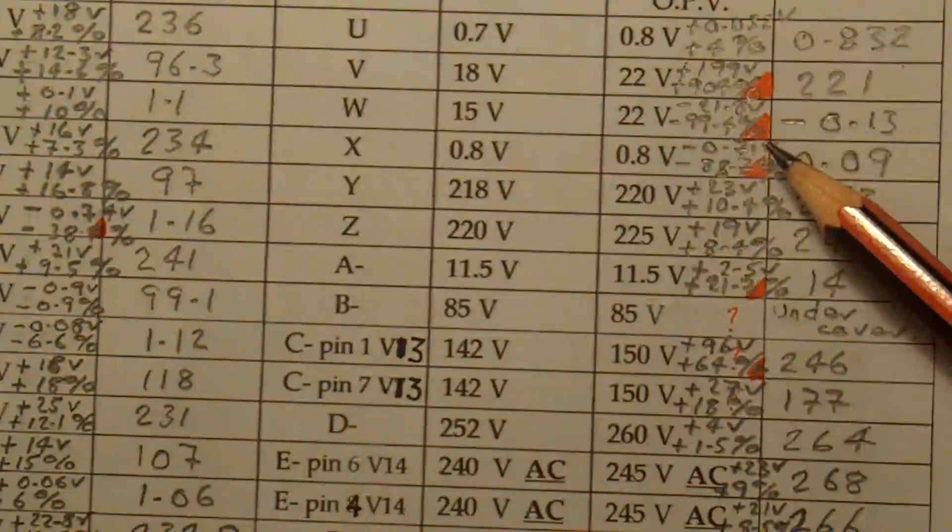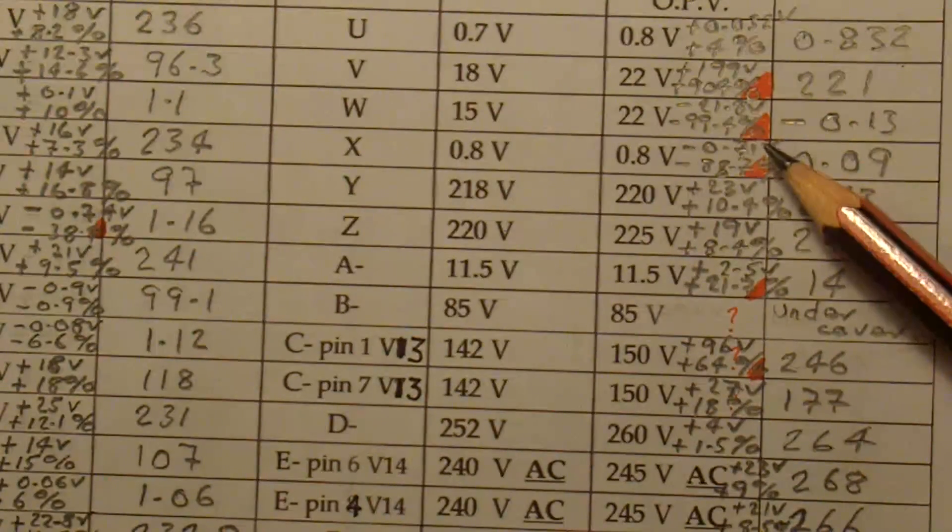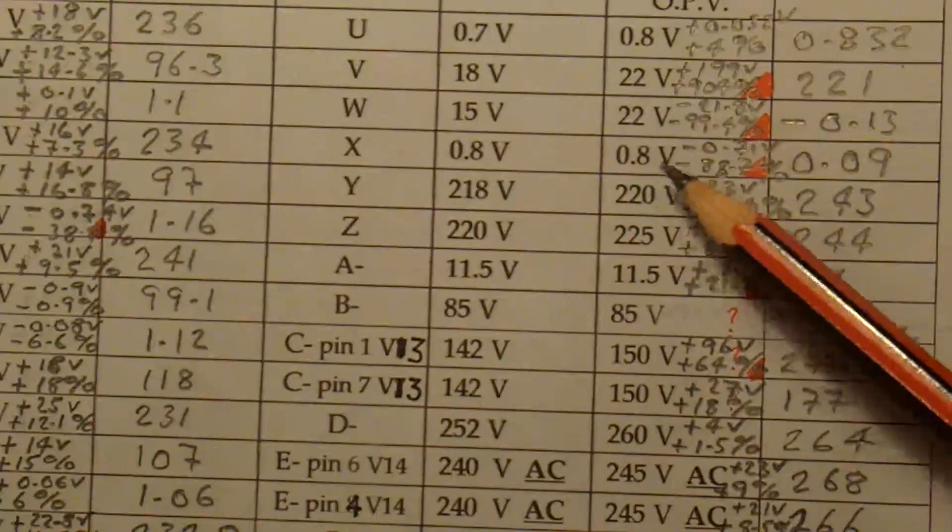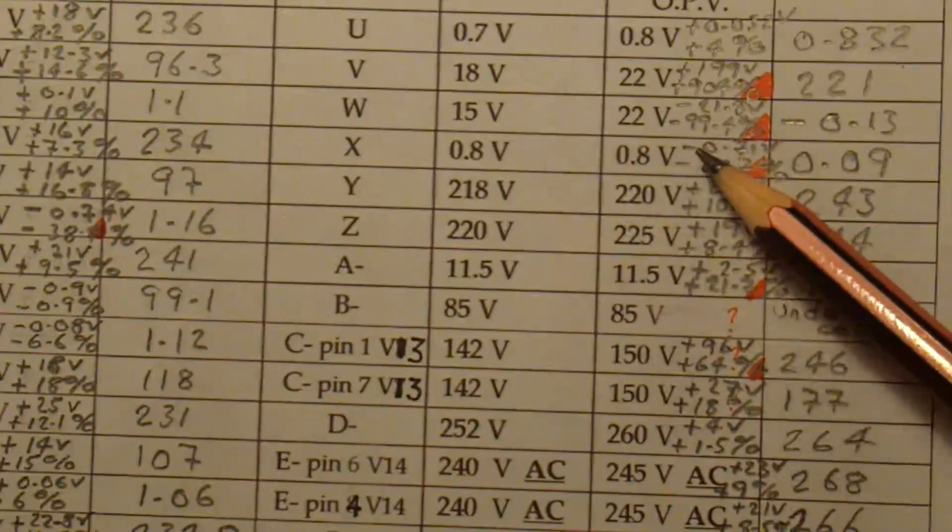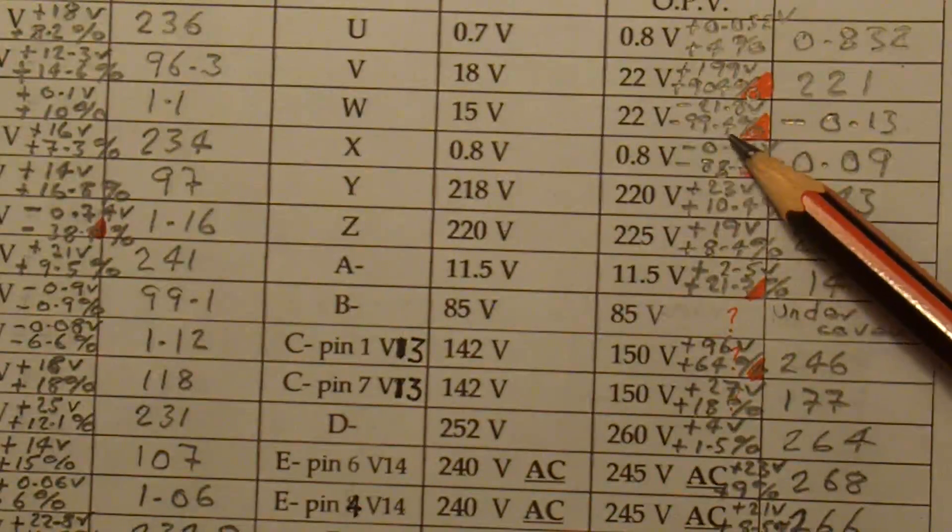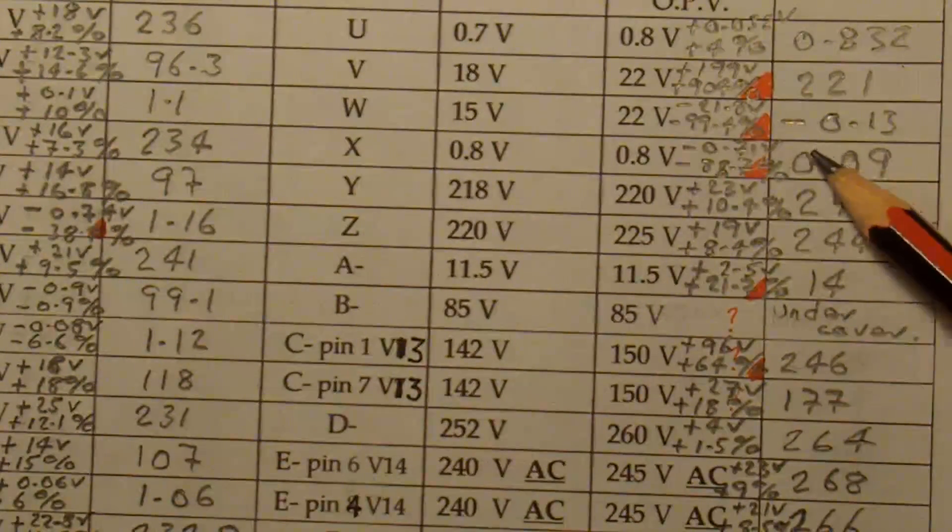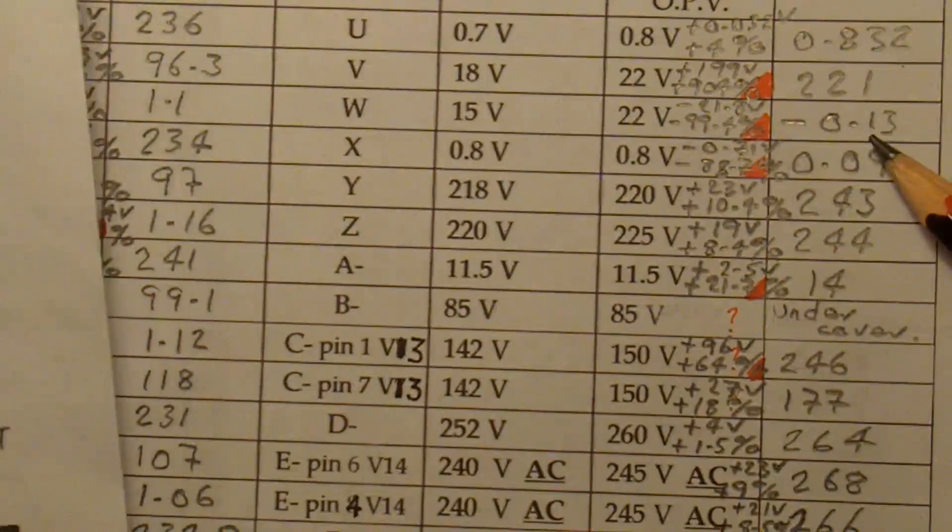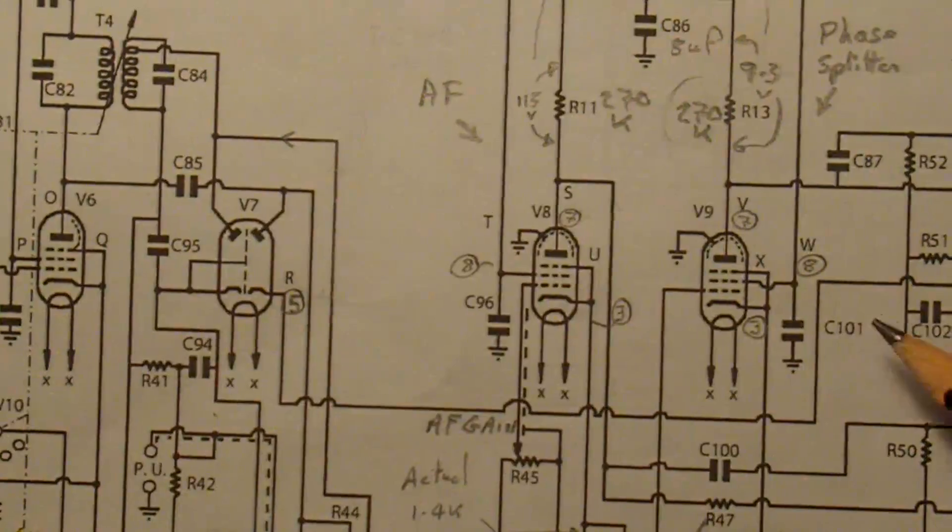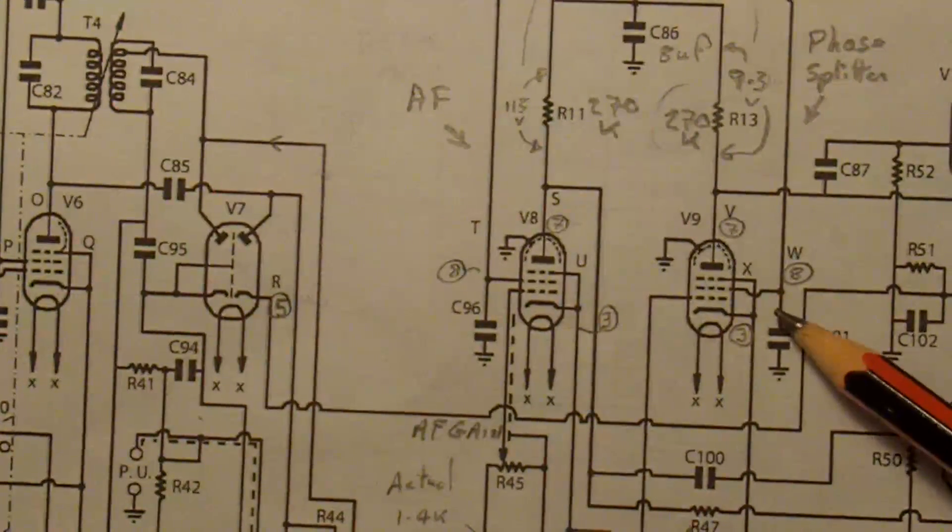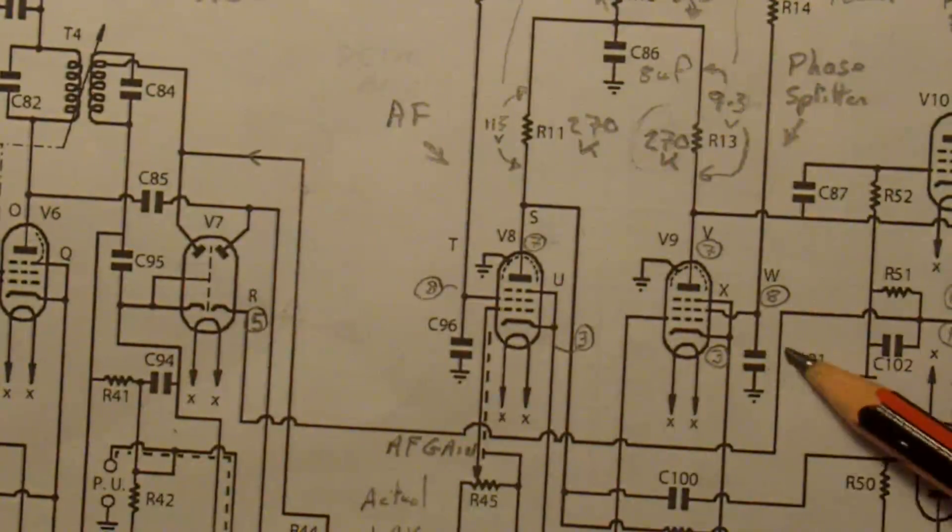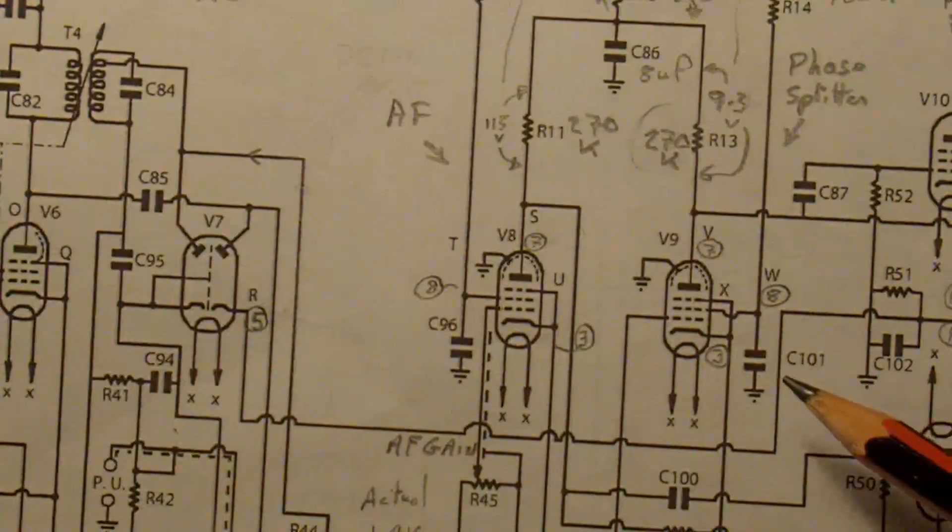And the other voltages associated with that valve on test point W, we're expecting 22 volts, we're actually minus 99% at minus 0.13. So test point W again is on the screen grid. So it looks like that is a bit of a suspect there.